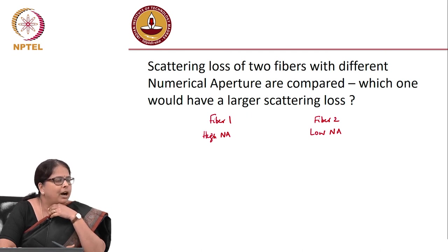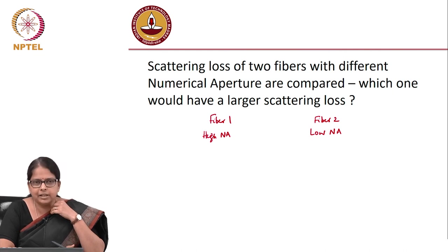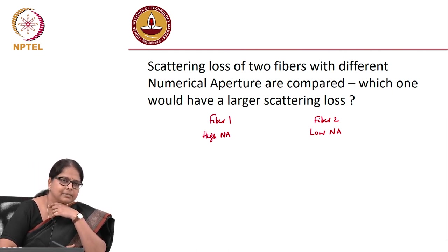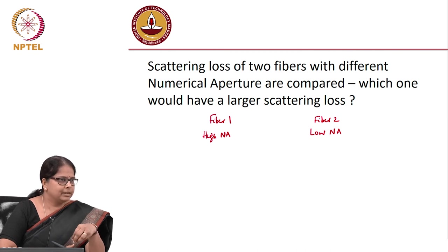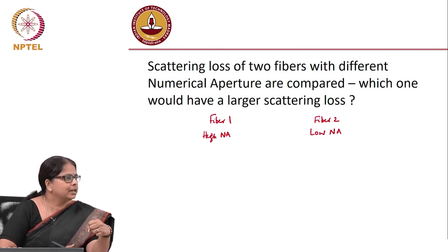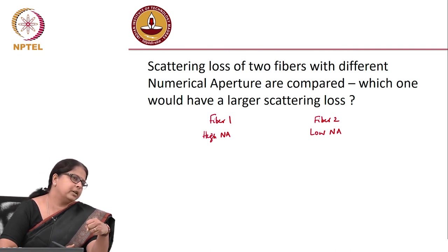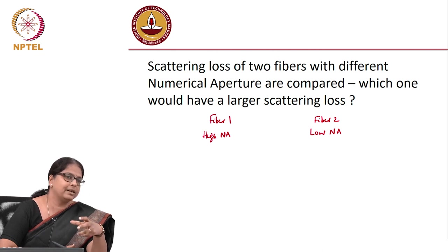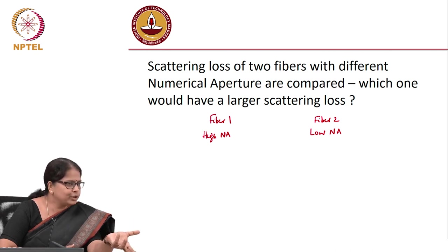The answer is no — they will not have the same loss. To increase NA you change the refractive index by adding dopants. Higher NA requires higher dopant concentration, and dopants act as impurities for the scattering process. More impurities means more scattering, so a higher-NA fiber has greater Rayleigh scattering loss.